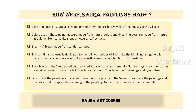Now let us learn how Sora art paintings were made. The base was the reddish, brownish, blackish walls of the houses of Sora tribe villagers. The colors used were mainly natural colors and natural dyes made from natural ingredients like rice, white stone, flowers, flower extracts, leaf extracts, and so on. For brushes, tender bamboo sticks were taken and used to create those beautiful paintings. The paintings mainly depicted the religious deities of the Sora and were done on good occasions like festivals, marriages, childbirth, and harvest.